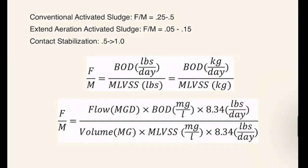The F-to-M ratio can be calculated using the U.S. customary system units, such as pounds, or the SI system, also known as the metric system, using kilograms. Today our example will cover the American Standard System, because those are the units most typically used on certification exams. BOD loading is calculated as the food portion of the equation. The microorganism portion is calculated in a similar way, but we use the volume of the tank instead of the flow.